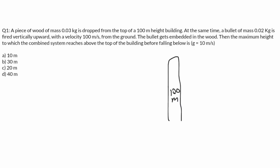First of all, let's find the meeting point — exactly where the bullet and the wooden block meet. We will call the displacement of the wooden block at the point of impact S. So the displacement of the bullet at the point of impact will be 100 minus S, since the height of the building is 100 meters.